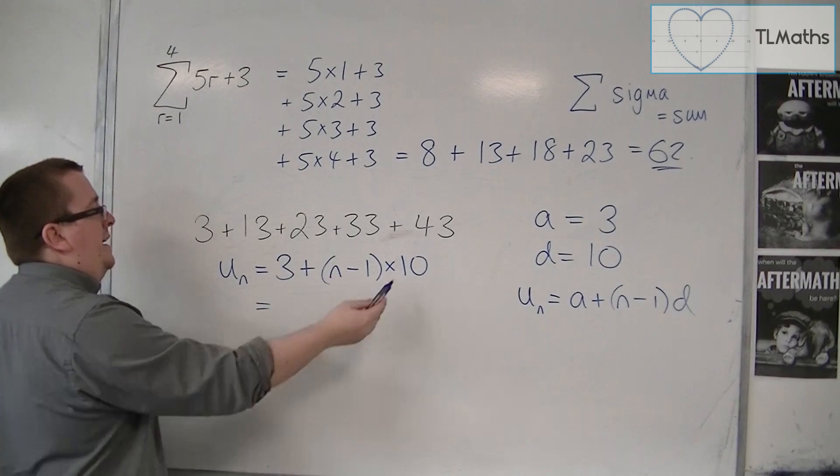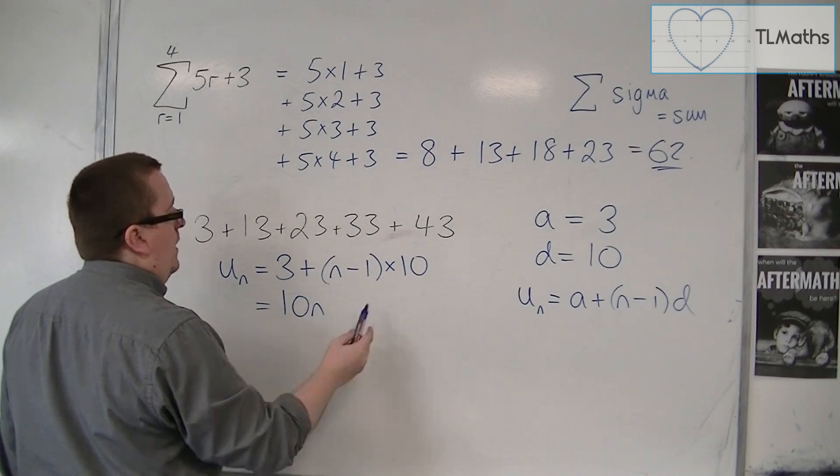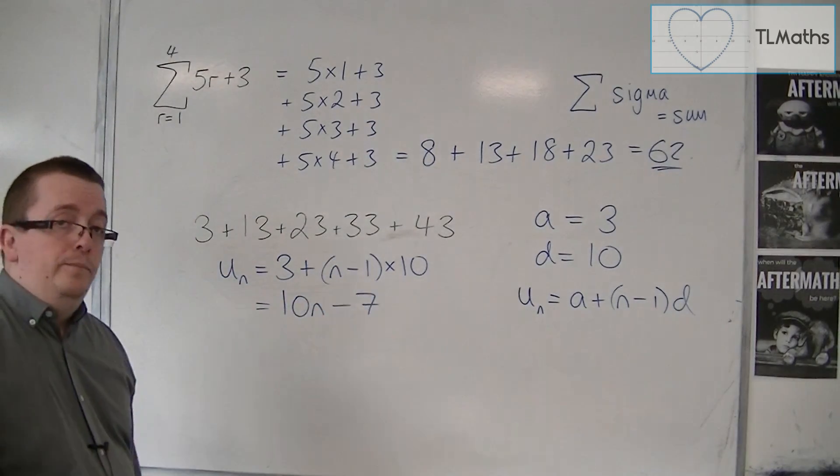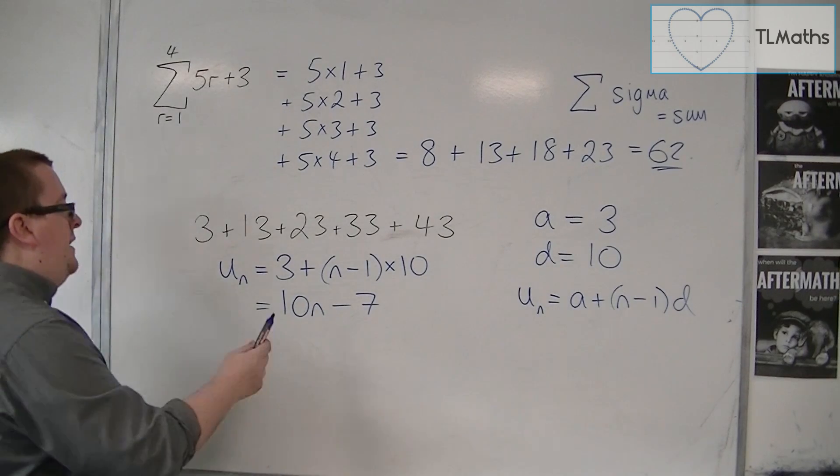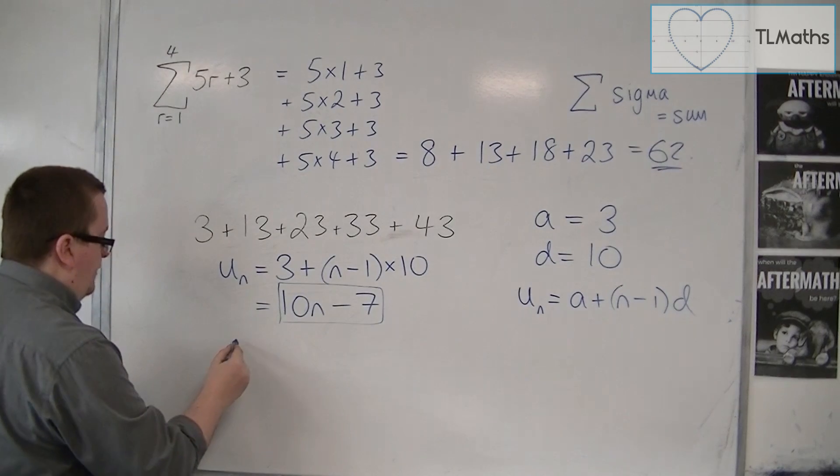So then I can expand that out. I'm going to have 10n, and I've got 3 take away 10, so minus 7. So that's my nth term. And it is this that goes into the sigma notation.